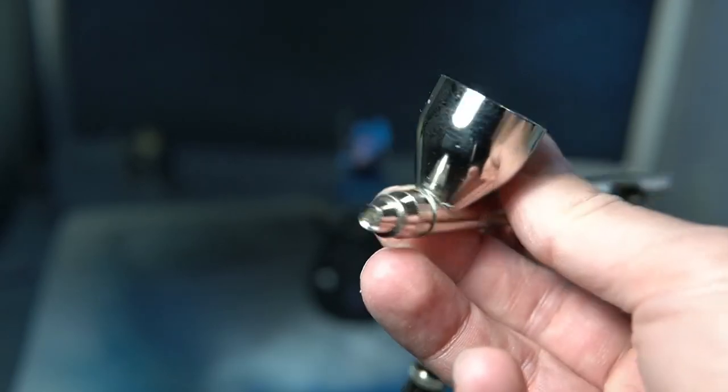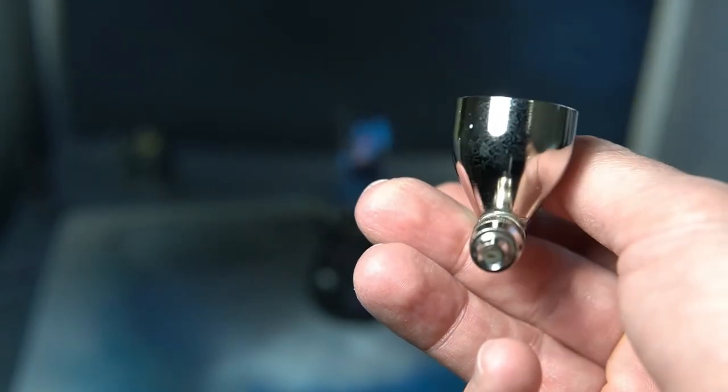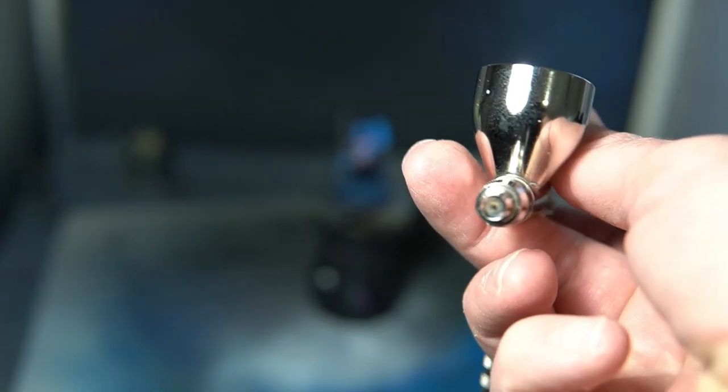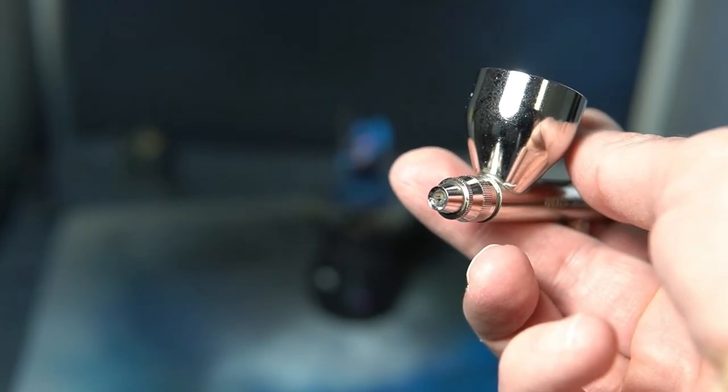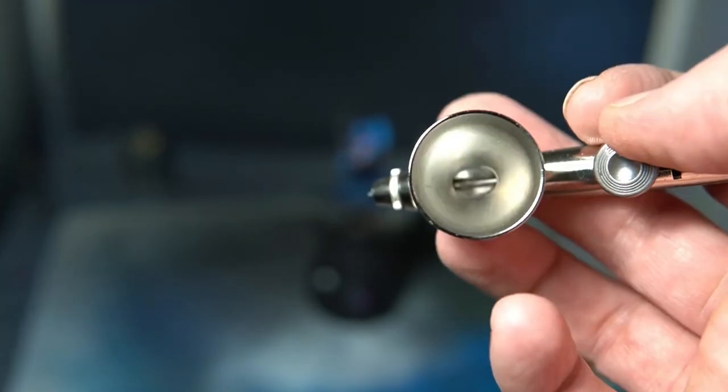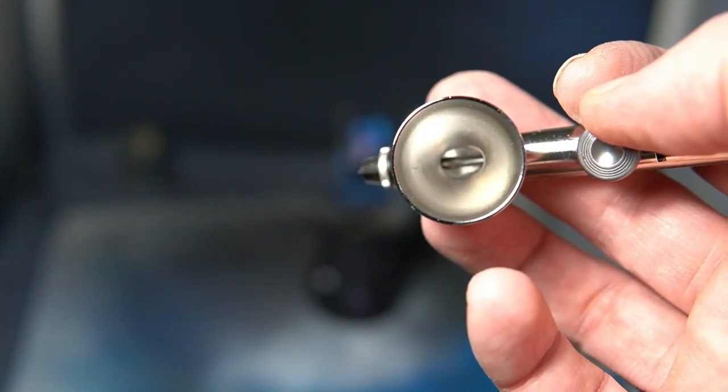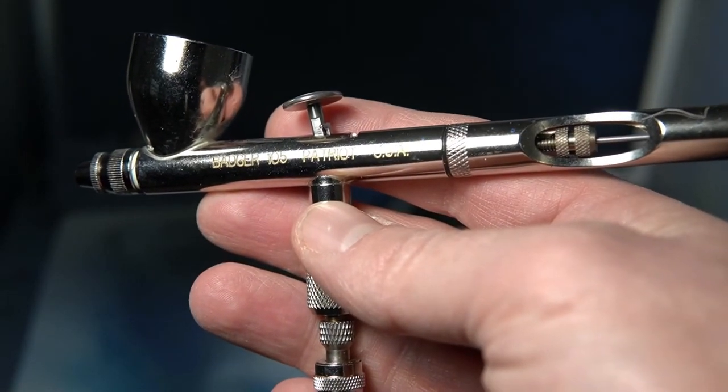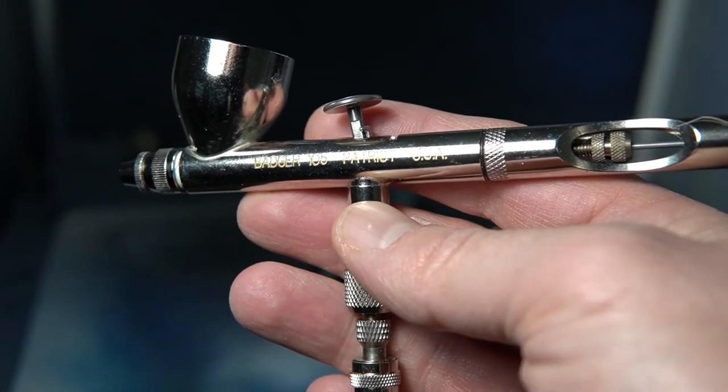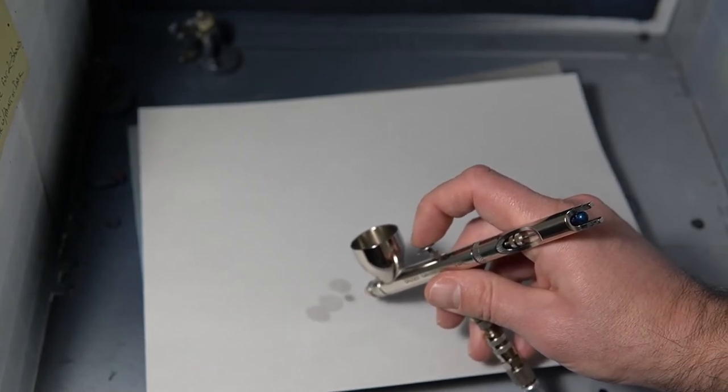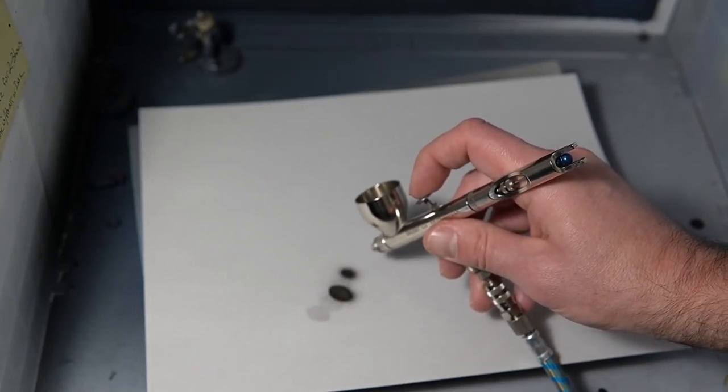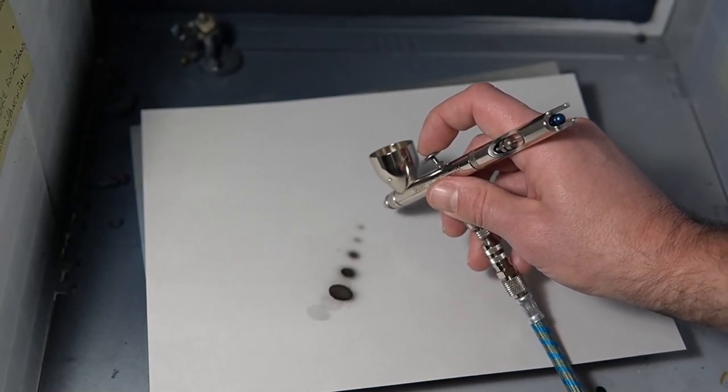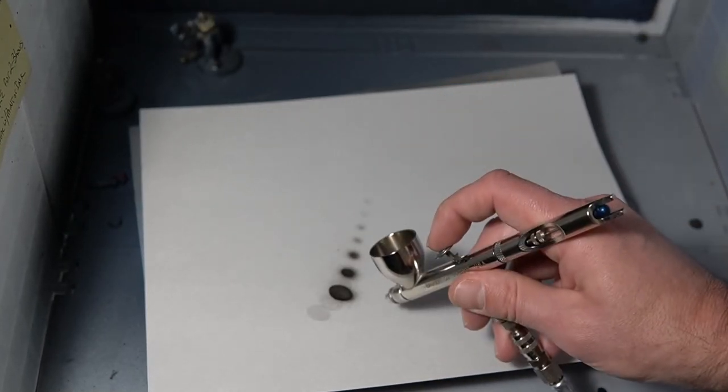And that's the Badger Patriot 105. Great for beginners because you can do the priming, you could do a Zenithal, you can do base coating, you can shoot varnish through it. It could even do smaller things like little highlights and thin lines. You could see here, I'm spraying anything from a large dot to really small, fine, light dots. This is all with the Badger.